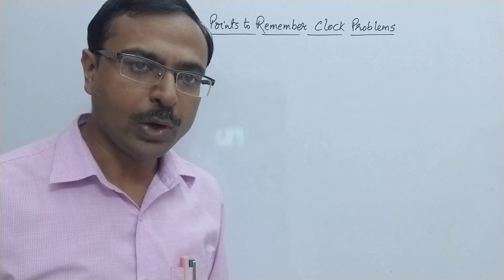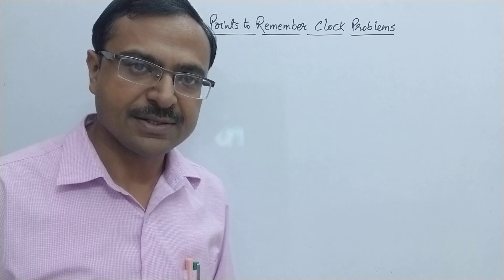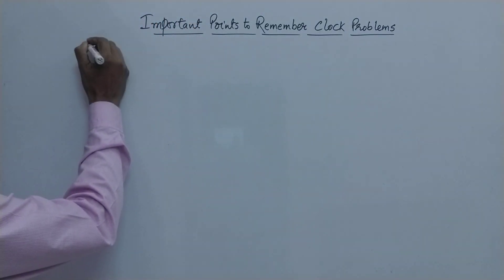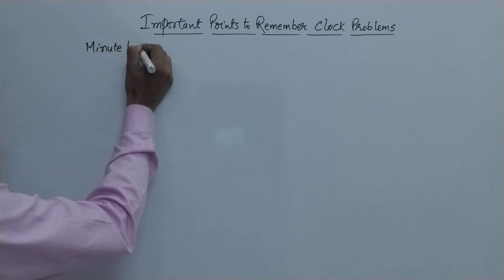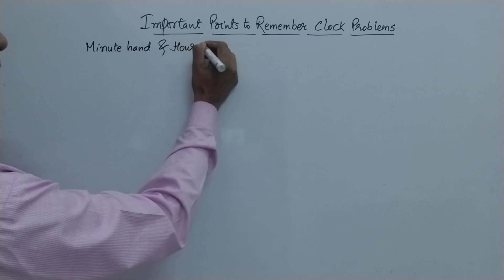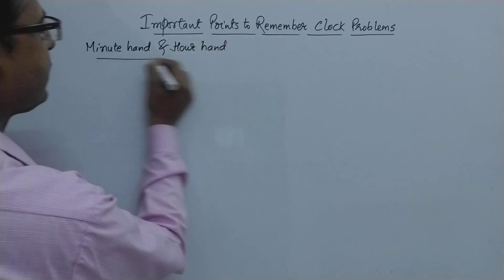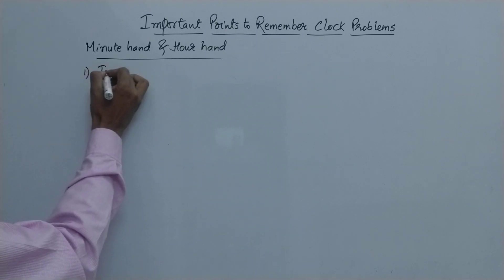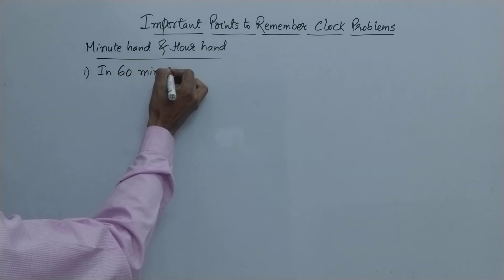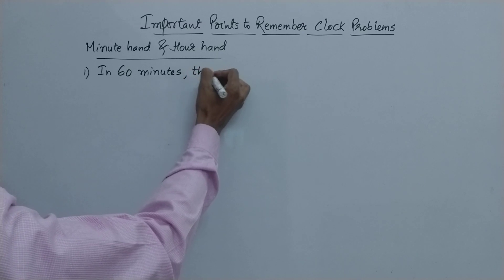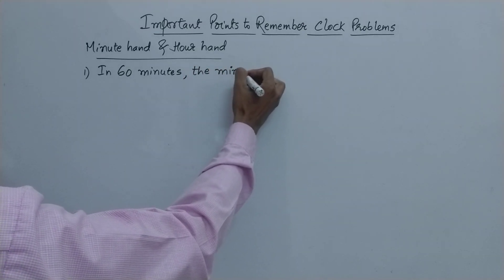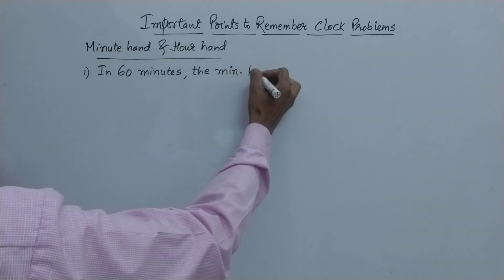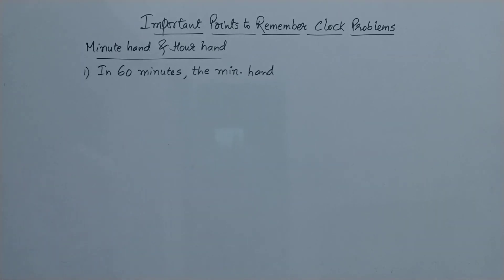Now we all know that there are two hands of the clock based on which questions are basically asked. One is the minute hand and the other is the hour hand. Based on the characteristics of these two hands we have some points to remember. The first important point is that in 60 minutes, the minute hand — I'll call it min. dot — gains 55 minutes on the hour hand.